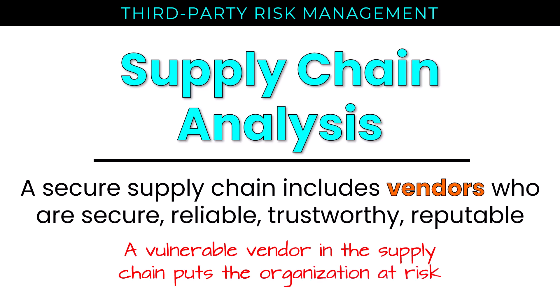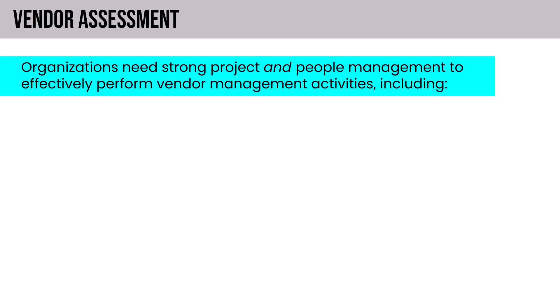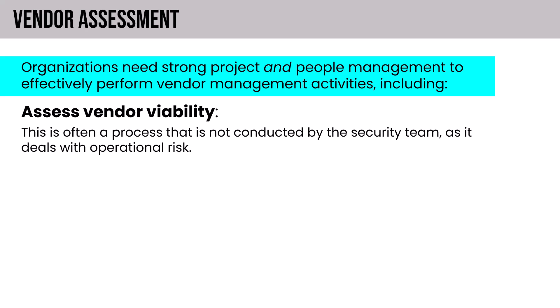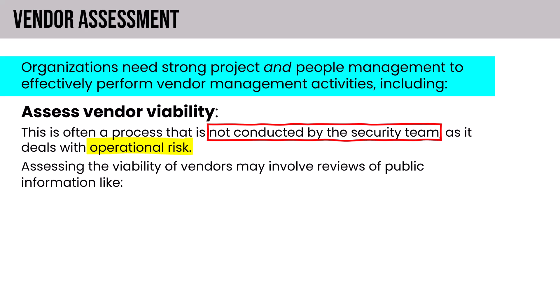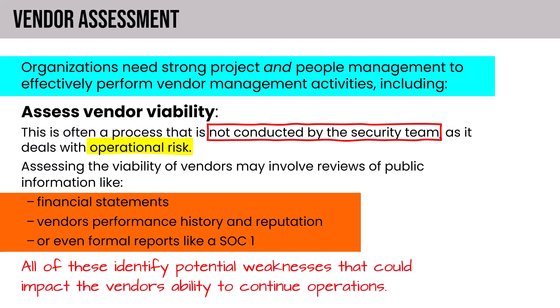Maintaining one's security posture is an ongoing process, not a one-time event, and a single vulnerable vendor in the supply chain puts the organization at risk. Vendor viability is an operational risk typically assessed using public information such as financial statements, performance history, reputation, or a formal SOC 1 report focusing on internal controls over financial reporting. Remember, the third leg of the CIA triad is availability — if a cloud provider goes out of business, that directly affects availability.